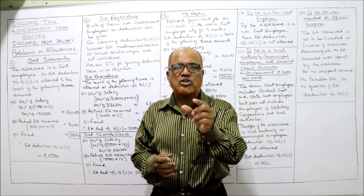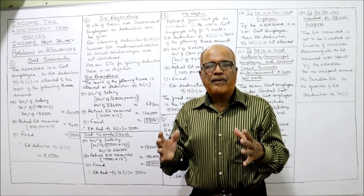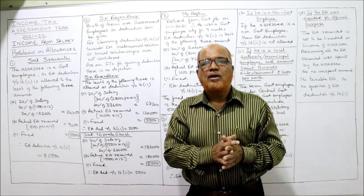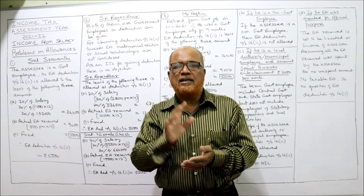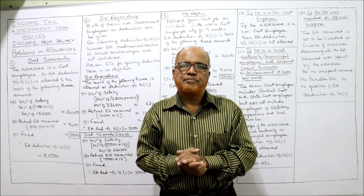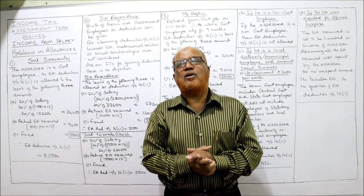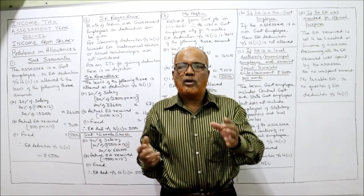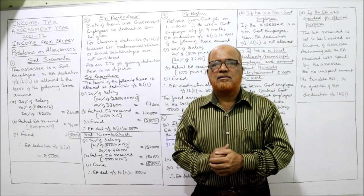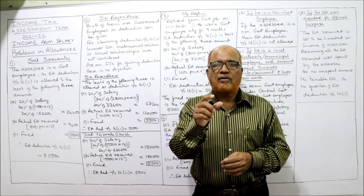In this video I am going to solve problems on entertainment allowance (EA) deduction under Section 16-2, and in the next video we will solve problems on HRA (house rent allowance). Briefly recapping: entertainment allowance is the allowance given by an employer to an employee for entertainment purposes. There are two types — official EA and personal EA. When EA is given for official purpose, it is not to be treated as income and is not taxable at all. If some amount is unspent from official EA, then that unspent amount is taxable.